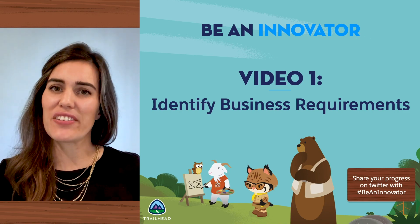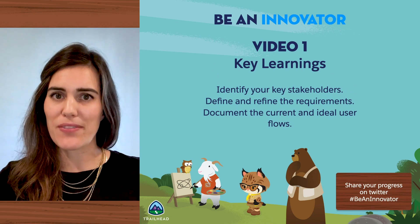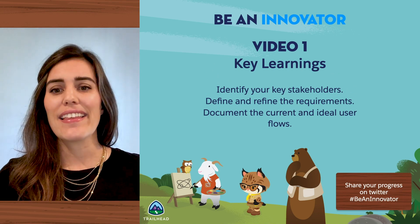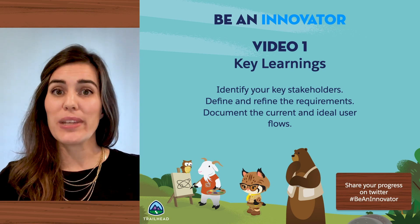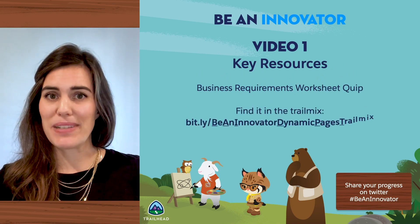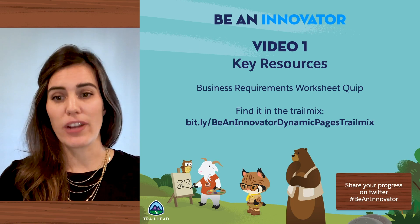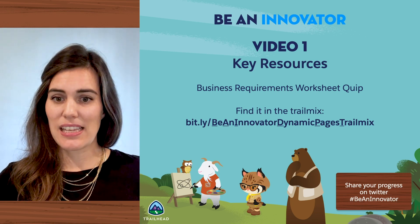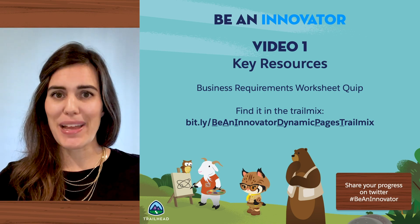We got so many great tips for identifying and gathering those requirements. To summarize: first, we want to identify those key stakeholders who will be involved every step of the way. Next, we want to define and sometimes refine those requirements by continuing to ask why. And lastly, we want to write out, map out, or sketch out our current business process or user flow so that we can then start to envision what that ideal process or user flow will look like. Now it's your turn — take a look at that business requirements doc and fill it out for your use case. You can find that in the Be an Innovator with Dynamic Pages trail mix. Share it on Twitter using hashtag BeAnInnovator and hashtag Sweepstakes. All entries for video one must be completed and tweeted by 10 a.m. Pacific time on May 11th. Restrictions do apply, so see rules for details.